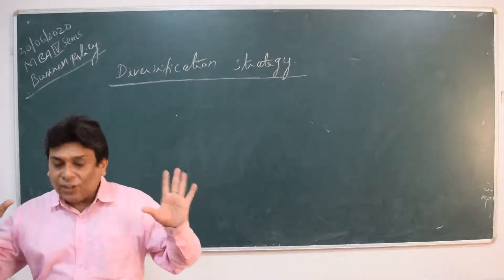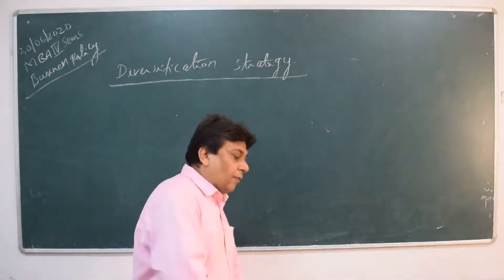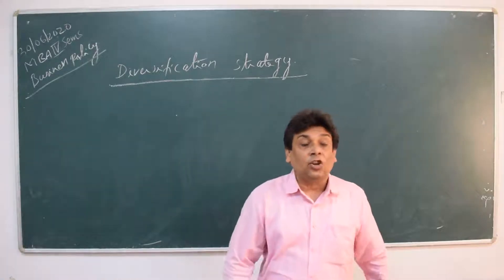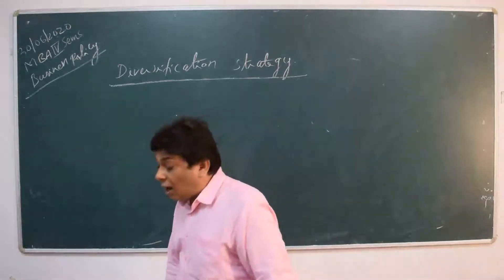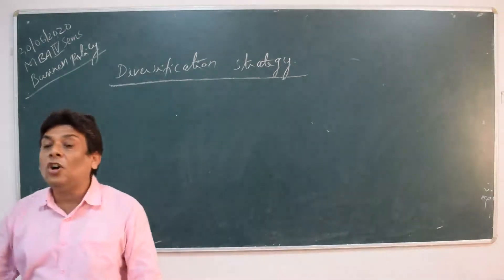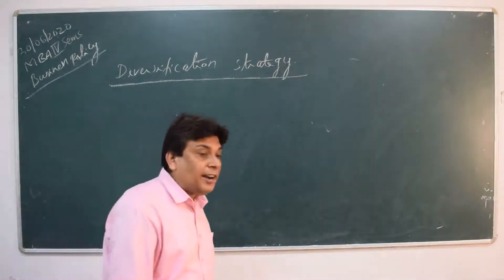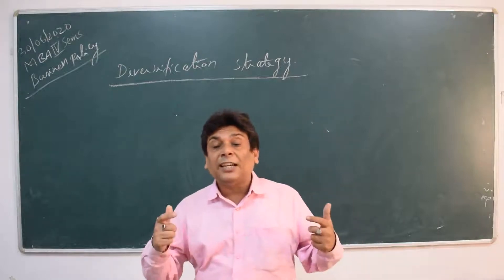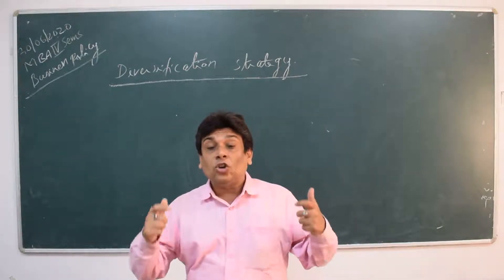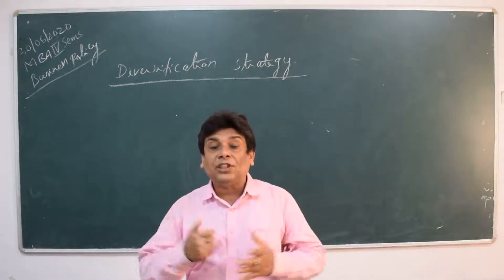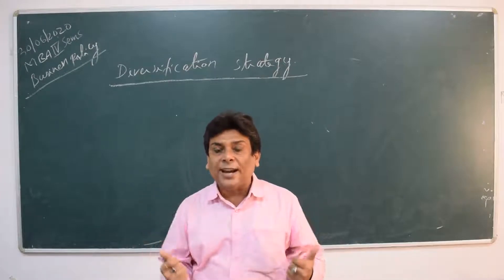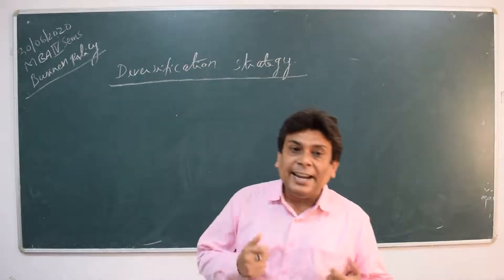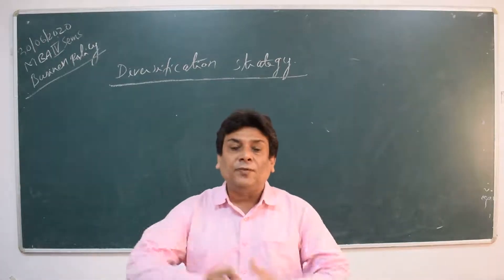So these are the three different types of concentric diversification. Now let us look at some Indian-context examples of concentric diversification before discussing conglomerate or unrelated diversification.